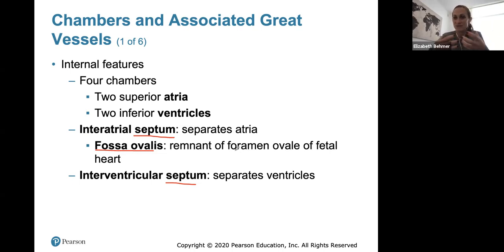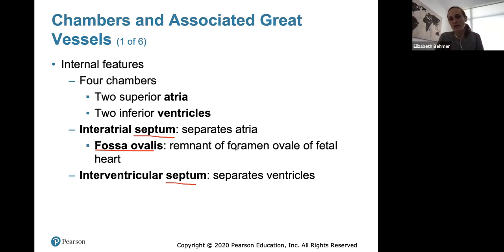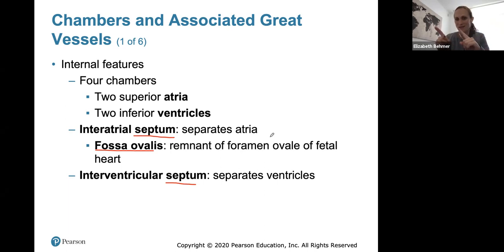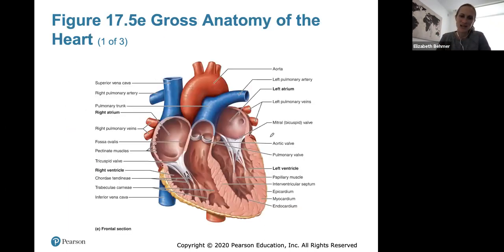In the fetal heart, inside the womb, the lungs are not yet developed, so you don't want blood going to the lungs. The heart has a hole between the atria, so blood goes directly from the right atrium to the left atrium, bypassing the ventricles entirely — because from the ventricles it would get pumped to the lungs. The fossa ovalis is the remnant of this hole that allowed the fetal heart to bypass the lungs.